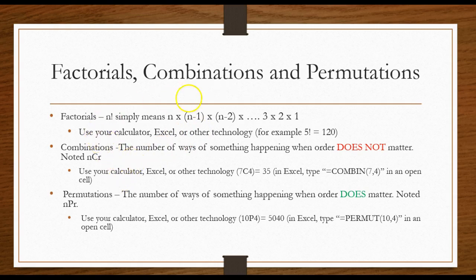With combinations. Combinations are the number of ways of something happening when order does not matter. Excel does it easily. Most scientific calculators do it very easily. Like to check yourself the combination 7C4 would be 35.